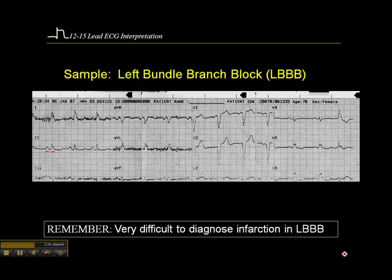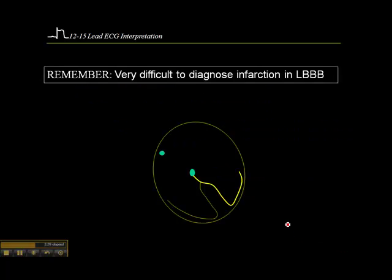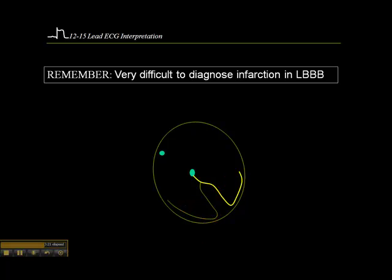From the STEMI presentation, it's very difficult to diagnose infarcts with a left bundle branch block. If there's a block in the left bundle, what you're seeing on the surface ECG is primarily depolarization of the right ventricle, which benefits from the rapid right bundle branch conduction system. The left ventricle depolarizes afterwards from muscle cell to muscle cell, so it's slower. Since most infarcts occur in the left ventricle, it's very difficult — sometimes impossible — to diagnose acute MI with a left bundle branch block. This is why new onset left bundle branch block is one of the STEMI criteria.